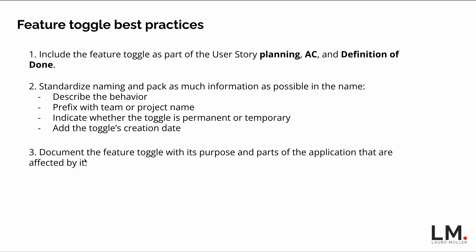Third best practice: always document, at least to some extent, the purpose of the feature toggle and which parts of the application are affected by it. The scope of a feature toggle should remain relatively stable — if it spreads too widely across the codebase, you risk very nasty coupling. Documenting the affected parts and the reason the toggle exists is a good way to limit its usage.